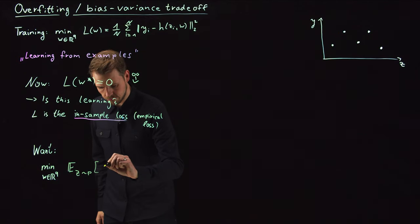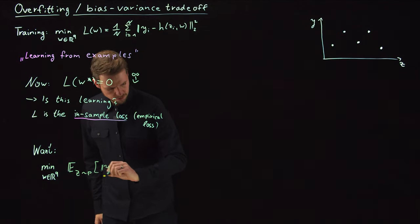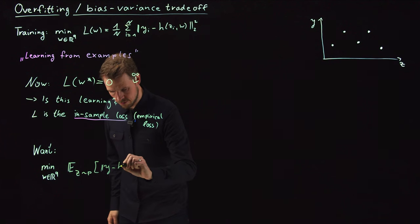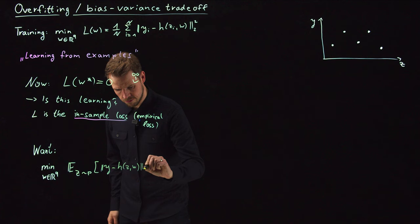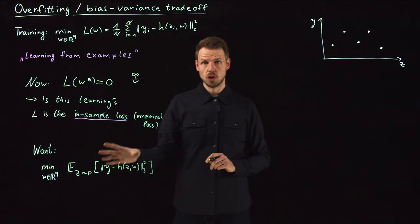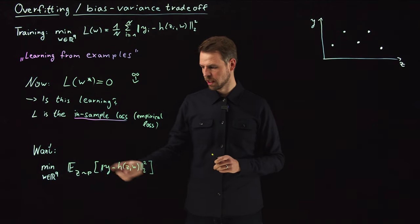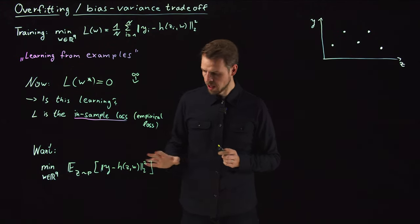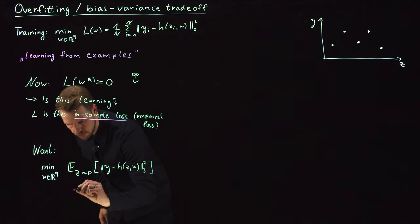The same loss, but now it's the expectation over my input data, given some distribution P. This is what we call the out-of-sample loss.